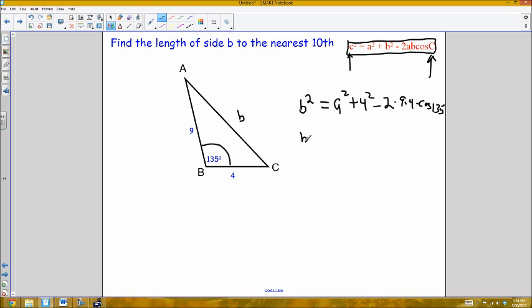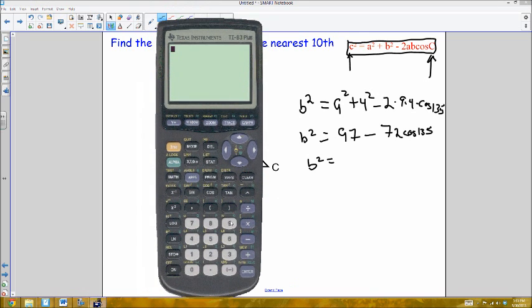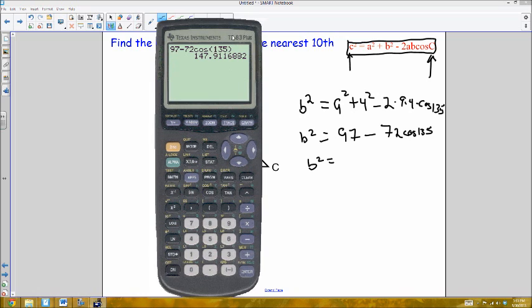Okay? So, now, I end up with b squared equals, well, 9 squared is 81, 4 squared is 16, so you add those together, you get 97, minus 2 times 9 is 18, and 18 times 4 is 72, cosine of 135, which tells me that b squared is equal to, now, if you take out a calculator, that might be convenient at this point, so I'm going to do 97, minus 72, cosine of 135 degrees. Now, we know from before, my calculator is already in degree mode, and I get 147.9116. Okay? So, I'm going to write that down